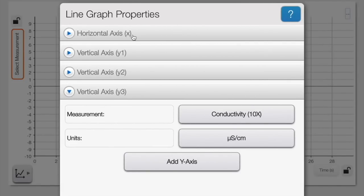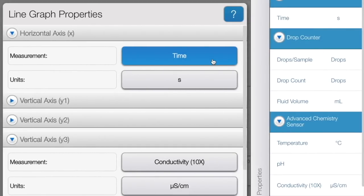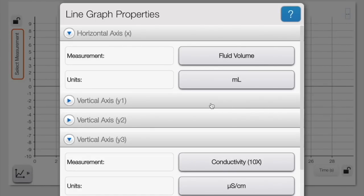Then press add y-axis again and select the conductivity meter 10x from the menu. Finally click the horizontal axis menu found above the vertical axis tab. Click on the button that says time and instead select fluid volume found under the drop counter menu on the right.